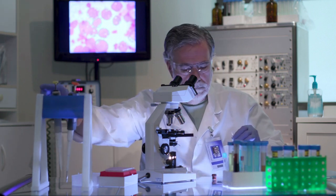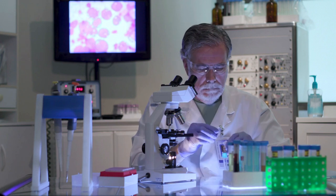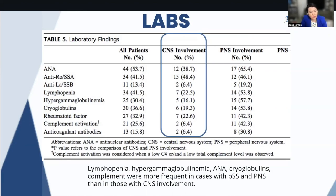All of these are important to be tested. What has been seen in patients with CNS or central nervous system involvement is that not all of them have a positive ANA — only 38% will have a positive ANA. About 48% have a positive SSA, and only 6% will have a positive SSB antibody.